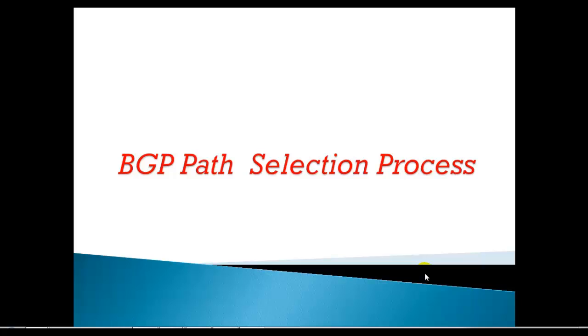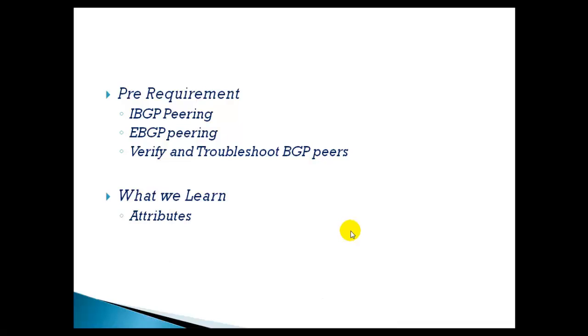In this video, we will learn the BGP path selection process. If you remember what we have learned in our previous videos, we have learned a lot of BGP and IBGP configurations, and we have seen how to verify and troubleshoot BGP pairings. The pre-requirement before you understand the BGP path selection process is you need to have a very good understanding of IBGP and EBGP pairing, configuration, verification, and troubleshooting.